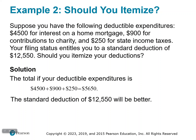You have your receipts — your bank sent your statement, you have your receipts for charity, and you know what you paid last year for state income taxes. If we add these together, we see the itemized total is $5,650.